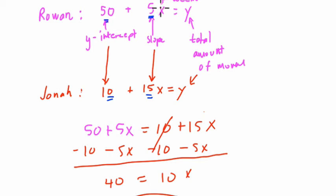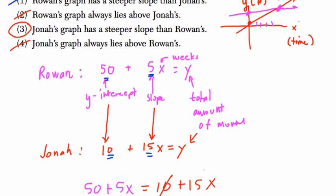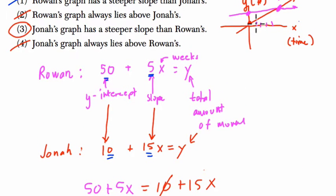So if we plug in 4 for Rowan, it's 50 plus 20, 4 for x is 70. And Jonah, 10 plus 60 is also 70. After that, Jonah will have more money than Rowan with this savings plan. So we can kind of get a sense that actually, I kind of got lucky with my sketch up here. After 1, 2, 3, and then 4 weeks here, they're at the same amount. Anything after that, Jonah's got more money in the bank.